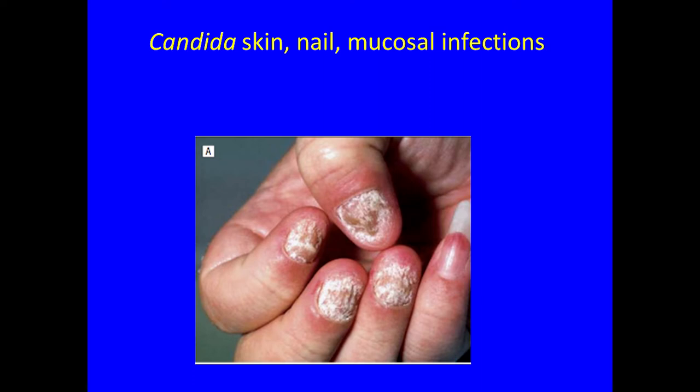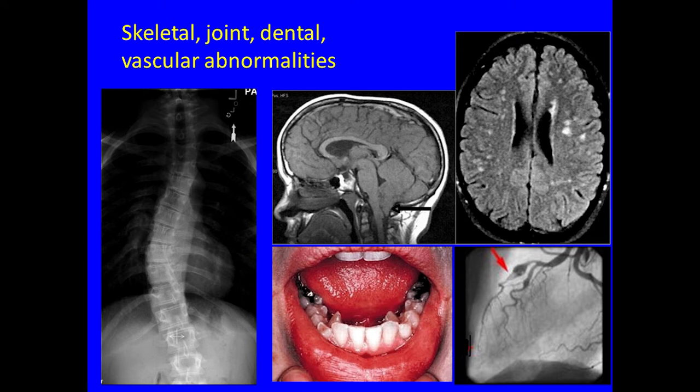Individuals also have trouble with candida infections — what we call chronic mucocutaneous candidiasis. Candida is a yeast that causes thrush in the mouth, skin infections, and nail infections. You can see an individual here with all their fingernails involved.